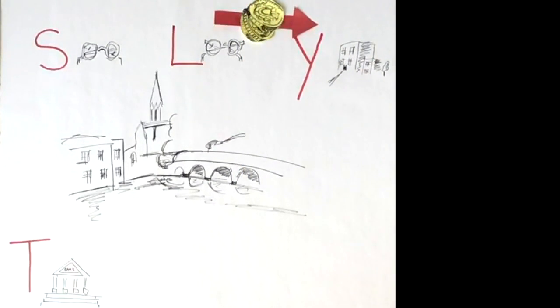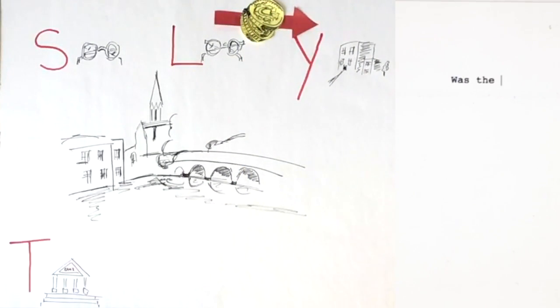By the time the case reached the House of Lords, there were two questions at play. First, was the money paid by Twinsectra held on trust for it? And if so, was Leach an accessory to the breach of trust that Simms had committed by paying it out, otherwise than in accordance with the undertaking?